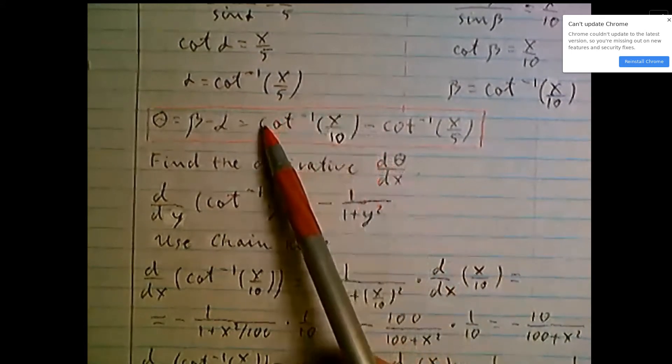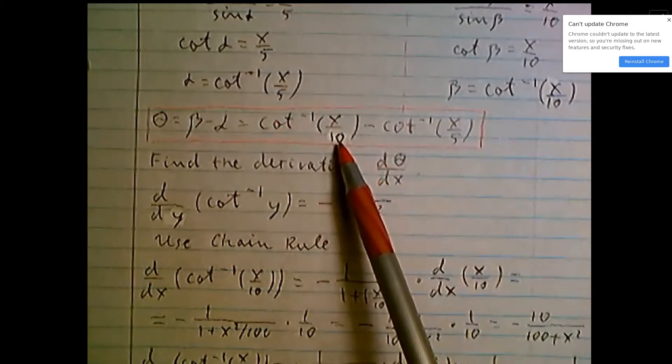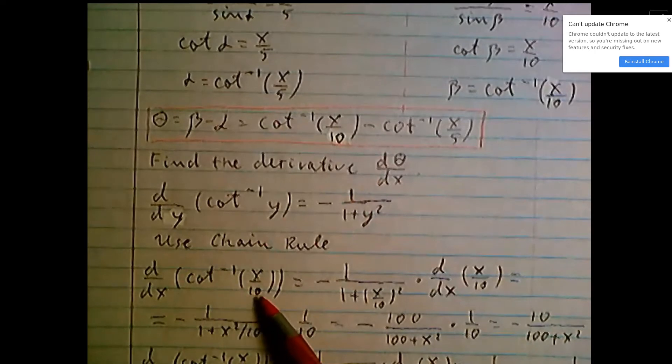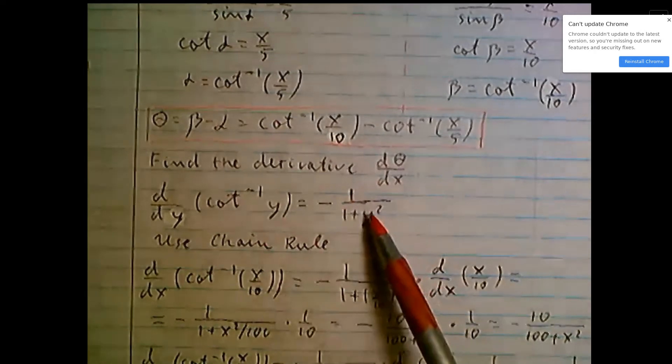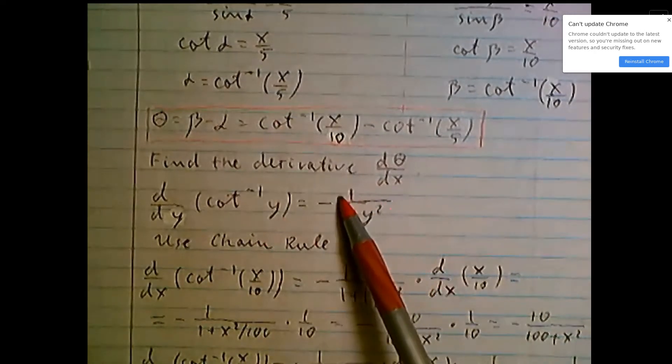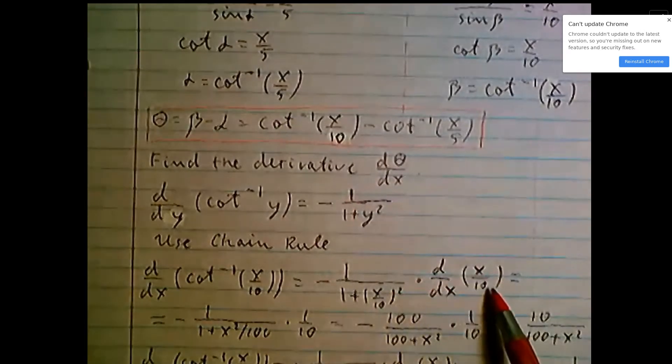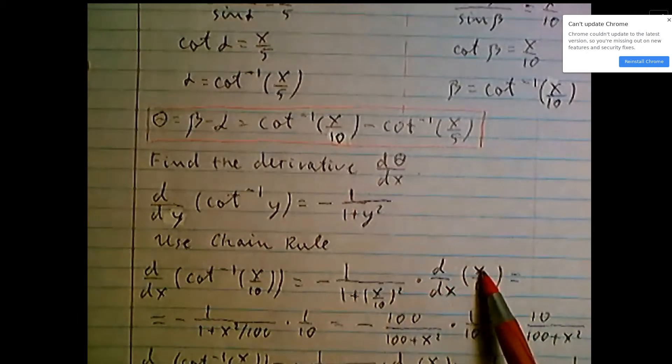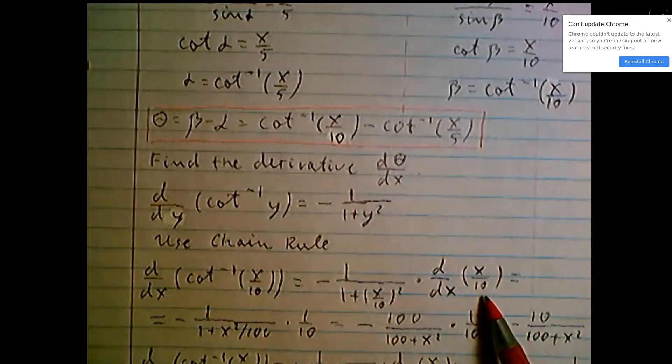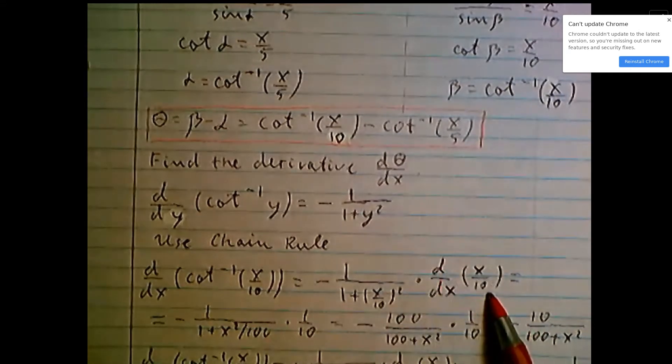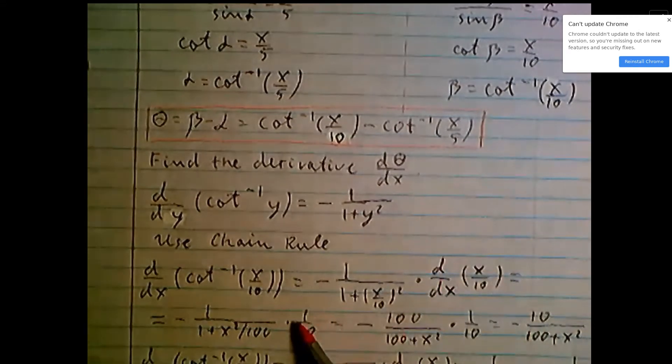Now consider that we use chain rule. Take derivative of inverse cotangent x over 10. Use this formula: instead of y substitute x over 10, and times derivative d/dx of x over 10. So it here will be minus 1 over 1 plus x squared over 100.